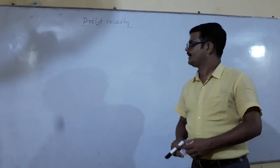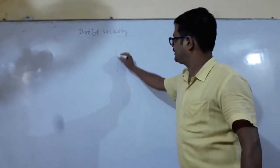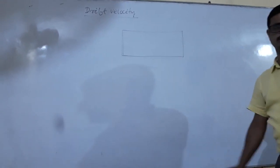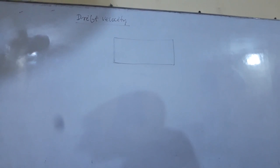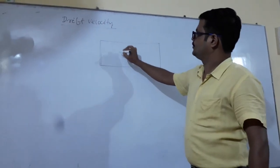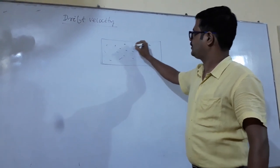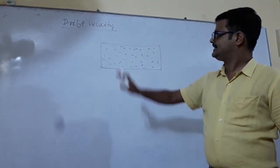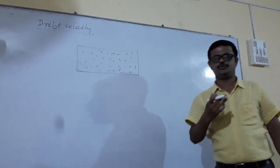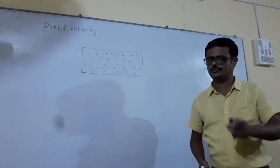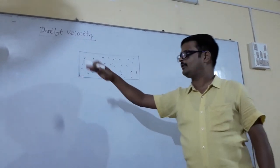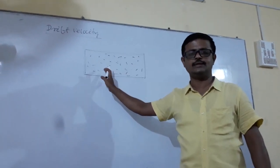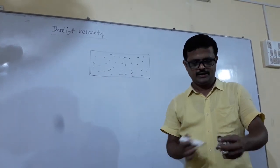What is drift velocity? Let me explain. This is a conductor. Already I have told you: inside every conductor there are a large number of free electrons. Whenever there is no electric field — whenever there is no potential difference between its two ends — no directed current flows.